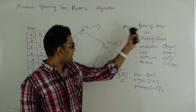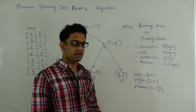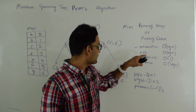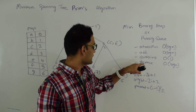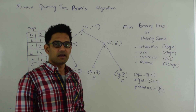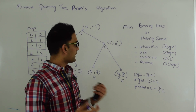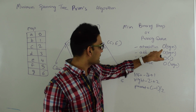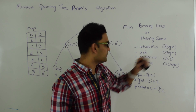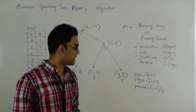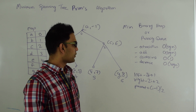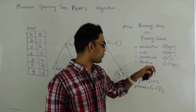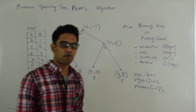Our minimum binary heap or priority queue needs to support these four operations: extract-min, add, contains, and decrease. A regular binary heap already supports extract-min and add in O(log n) time, and we also need it to support contains in O(1) time and decrease in O(log n) time.